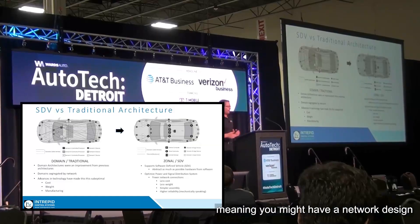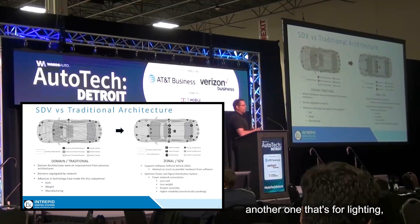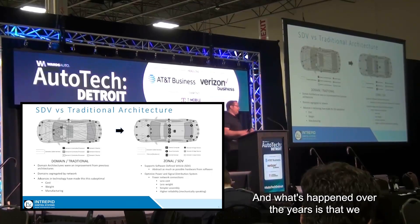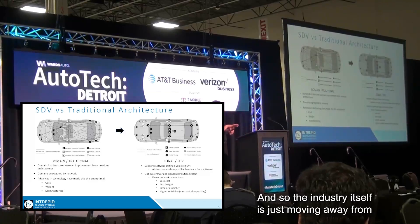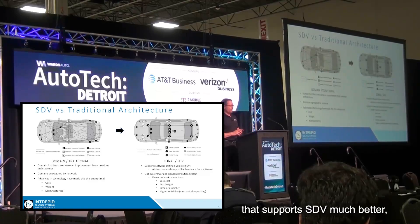In the past 30 years, vehicles have seen increasing electrical content and the architecture has been designed around specific features of the vehicle. We call this domain architecture — you might have a network specifically focused on powertrain, another for lighting, another for heating and cooling. Overlapping networks make the wiring harness more complex and heavier, so the industry is moving away from that paradigm toward one that supports SDV much better: a zonal architecture.